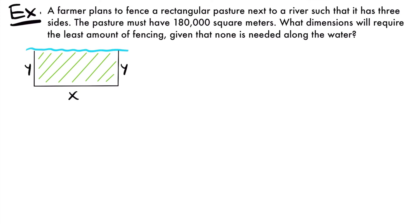Forming equations: the pasture must have 180,000 square meters of area, so our first equation is 180,000 equals x times y. This is our constraint because it involves a fixed number. We also want to minimize fencing, which relates to perimeter — the measurement around the outside of the rectangle. Since the pasture only has three sides needing fencing (none along the river), the perimeter equation is P equals 2y plus x.